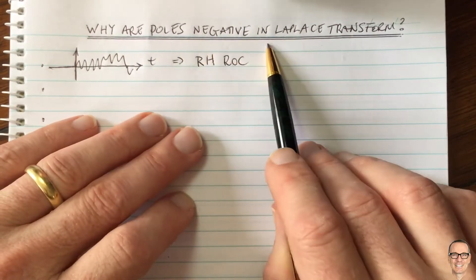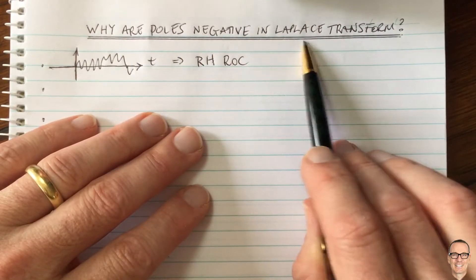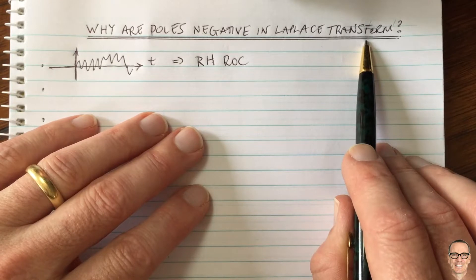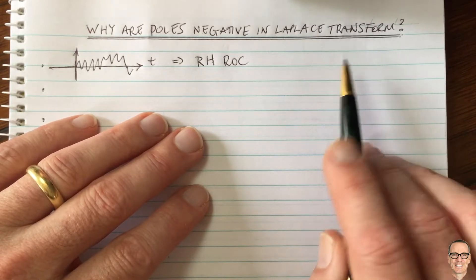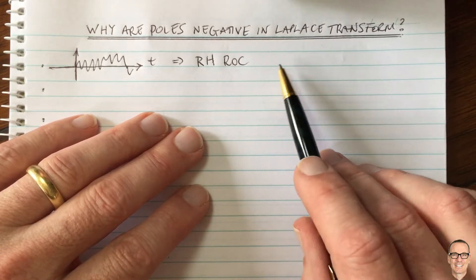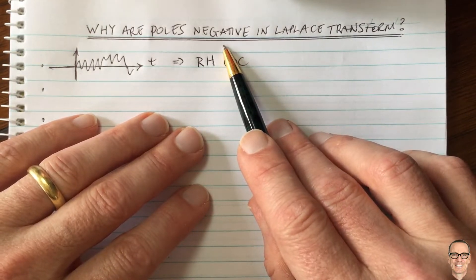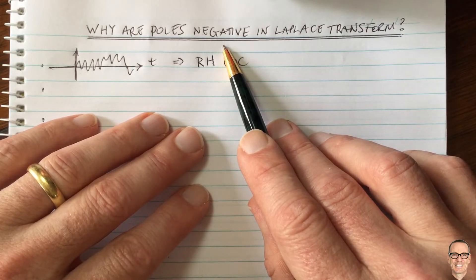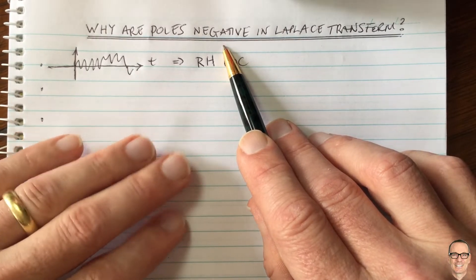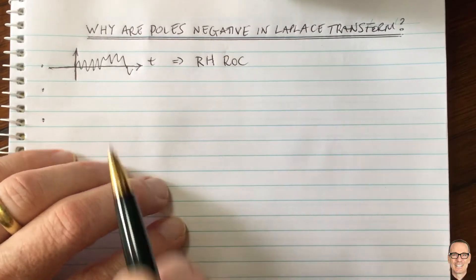So why are poles negative in the Laplace transform? The first thing to say is that they're not always negative, but in many cases it's important to have negative poles. So let's explore this.